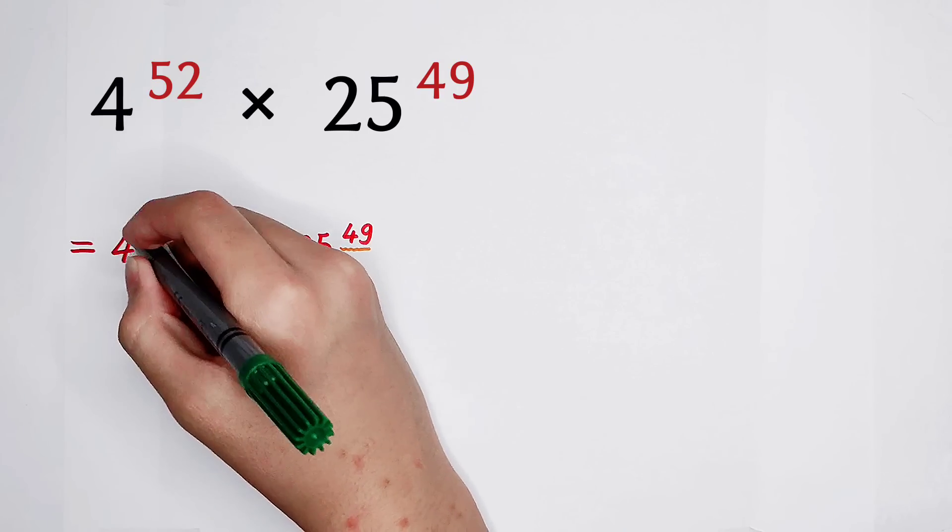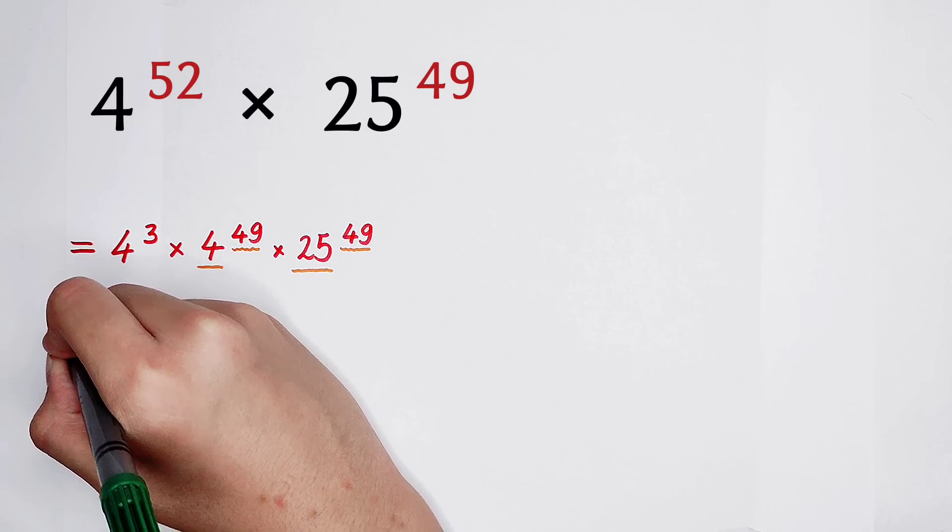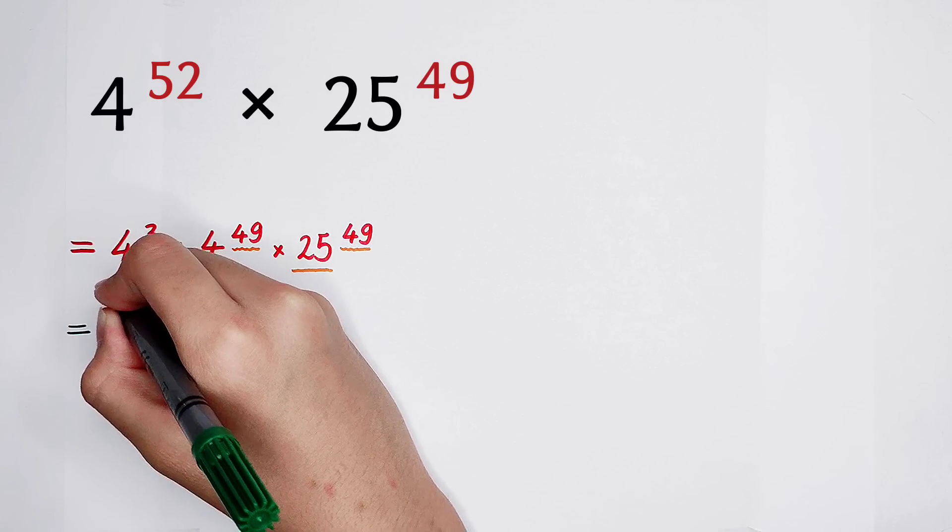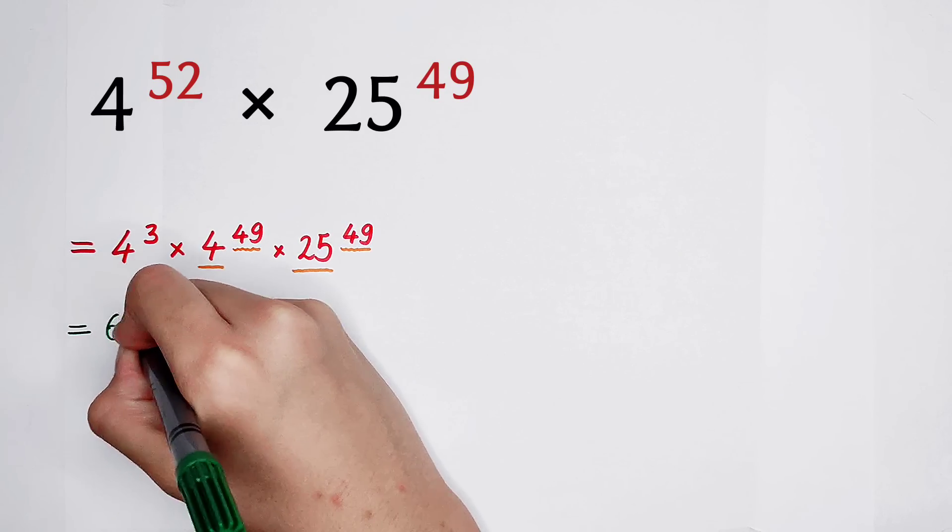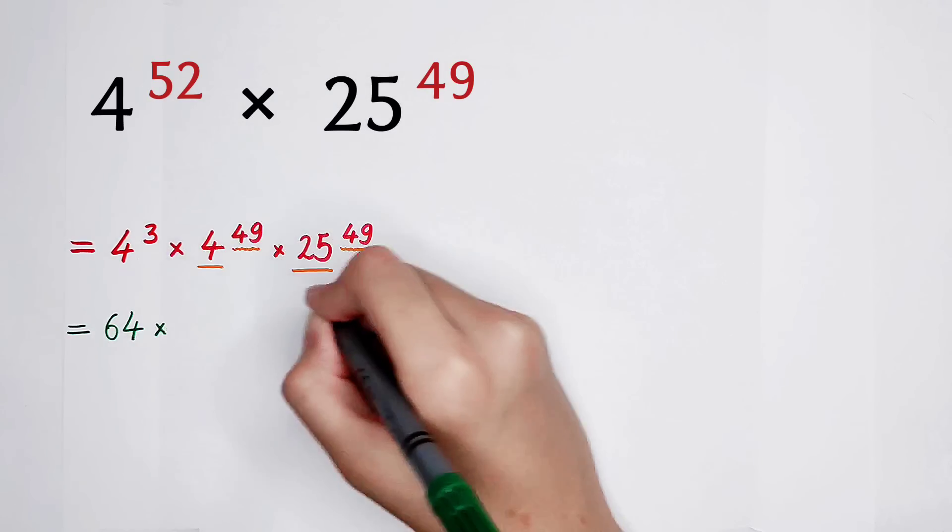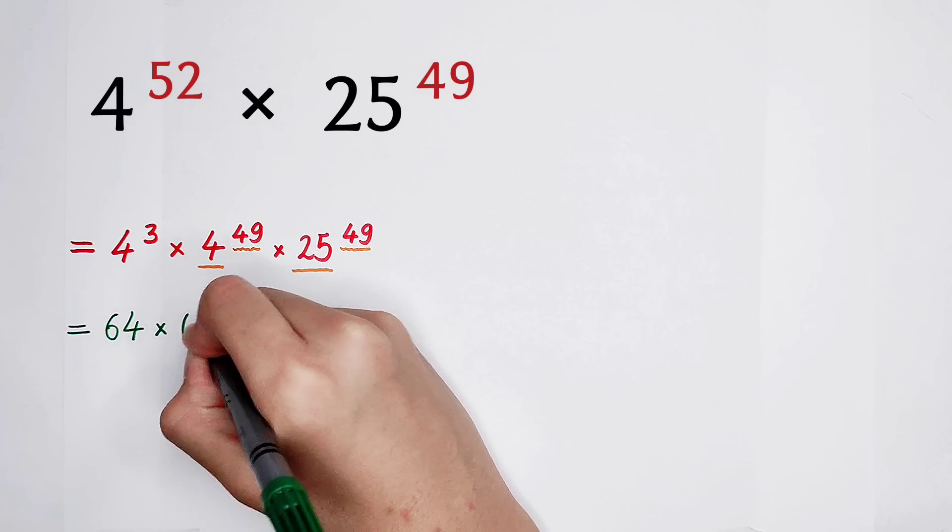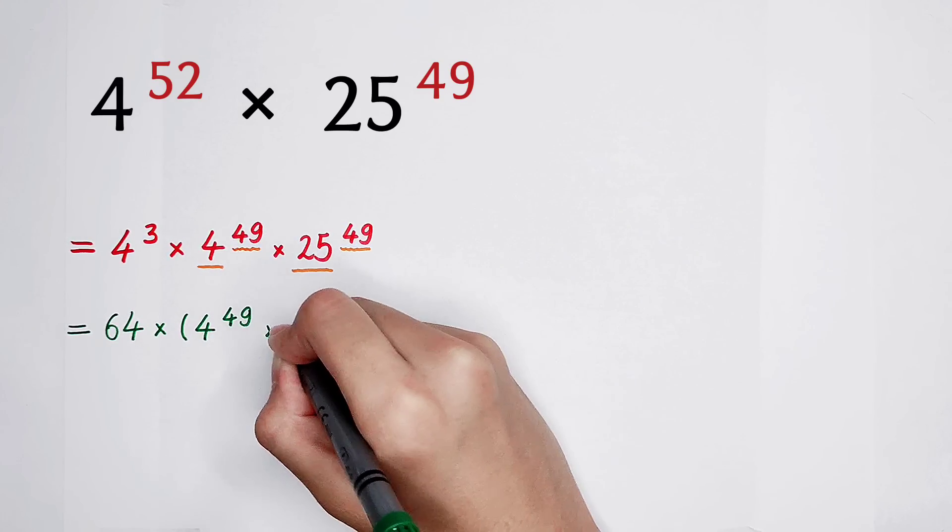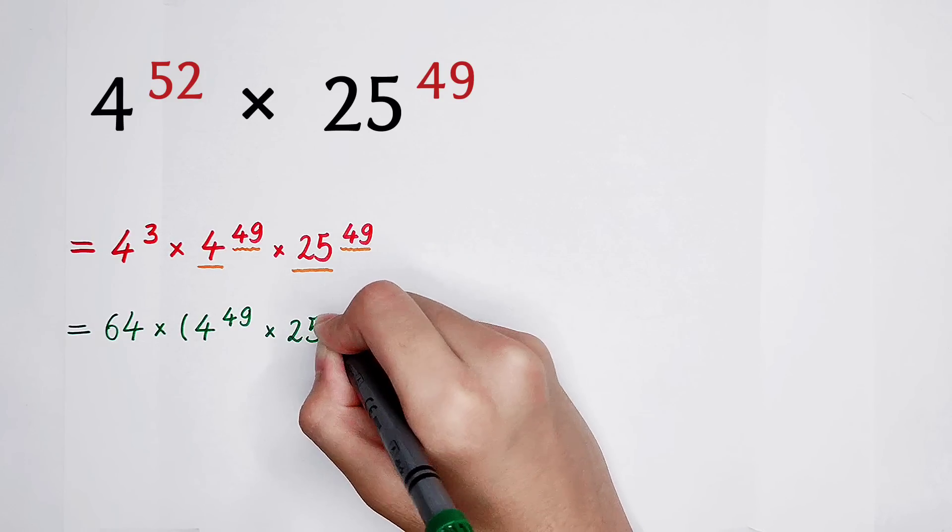Now, this exponent 3, it becomes lonely. 4 to the power of 3 is 64, and then times, let them get together. 4 to the power of 49, and then times 25 to the power of 49.